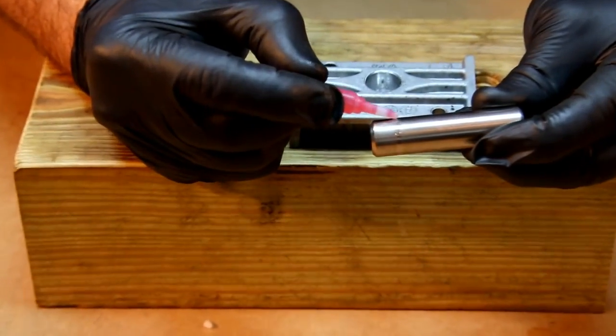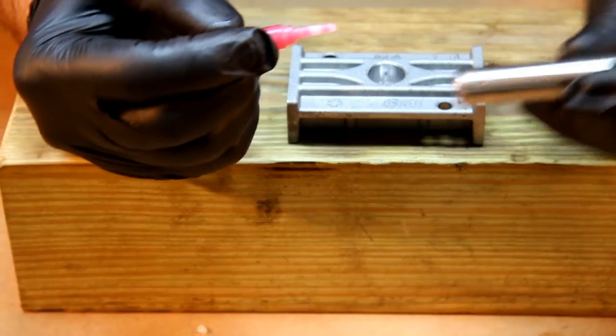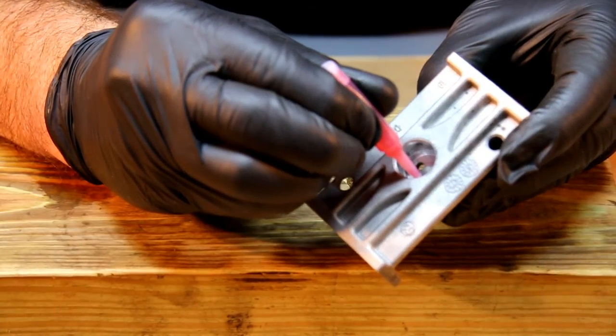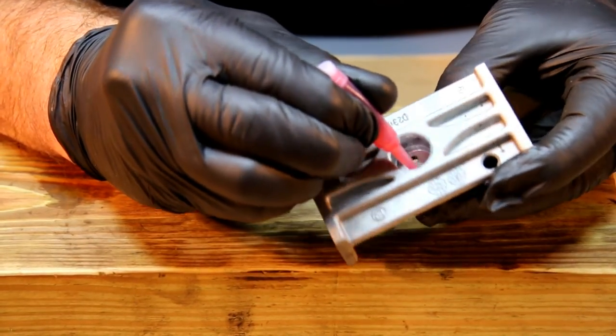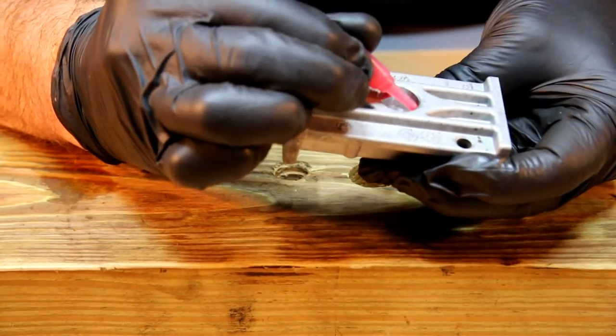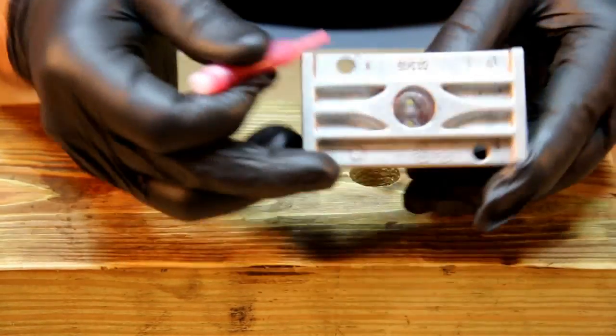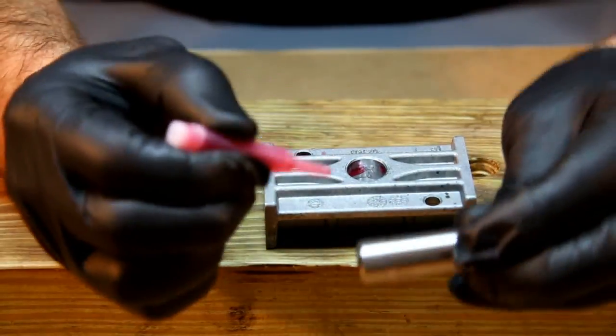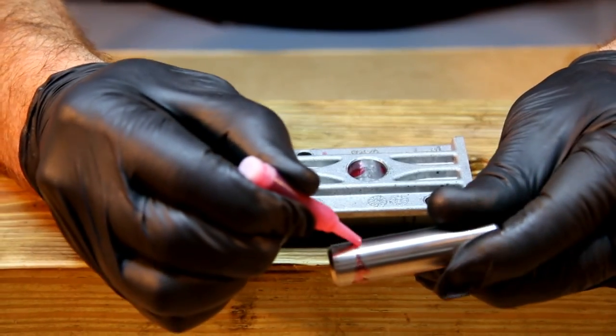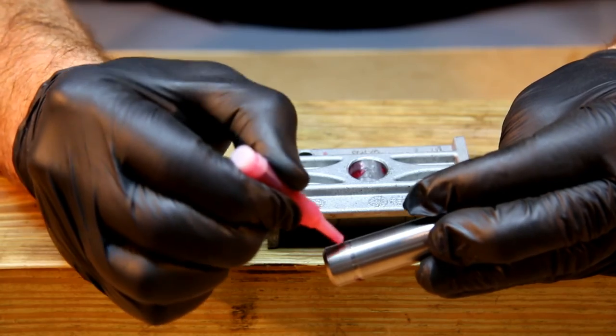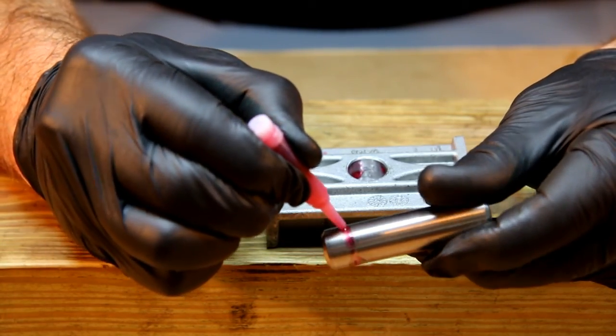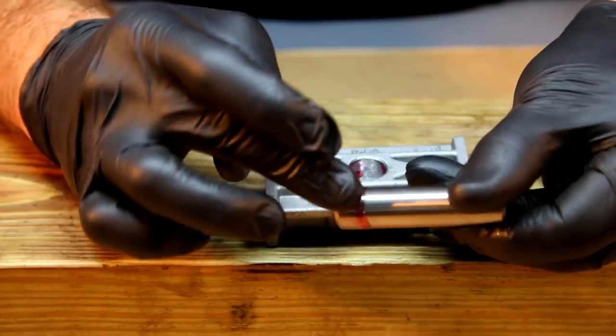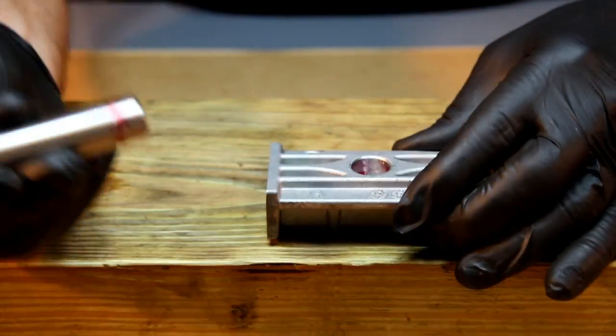You'll see on the piston there's a groove. This allows Loctite to seat into the piston cap. At this time we'll take this cap, put our Loctite in there, and apply Loctite on the cap.